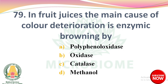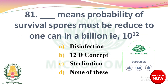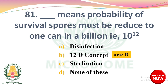In fruit juices, the main cause of color deterioration is enzymic browning by options: polyphenol oxidase, oxidase, catalase, methanol. The right answer is Option A: polyphenol oxidase. Next question: in low acid foods pH 4.5, the heat-resistant spore-forming microorganism dash is the most dangerous pathogen. Options: Salmonella, Streptococcus, E. coli, Clostridium botulinum. The right answer is Option D: Clostridium botulinum. Next question: dash means probability of survival of spores must be reduced to one in a billion, i.e., 10^-12. Options: disinfection, 12D concept, sterilization, none of these. The right answer is Option B: 12D concept.